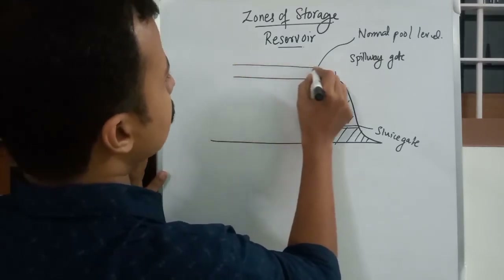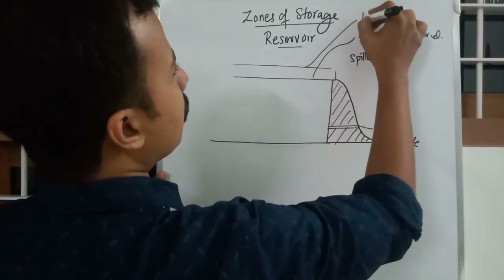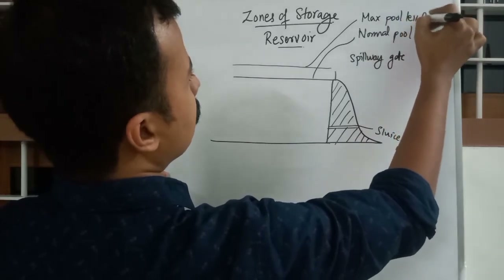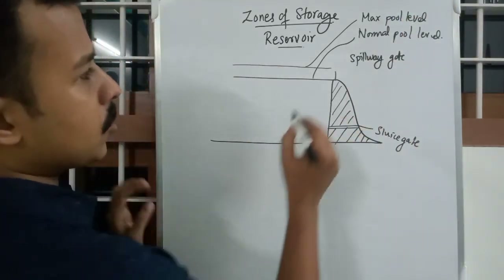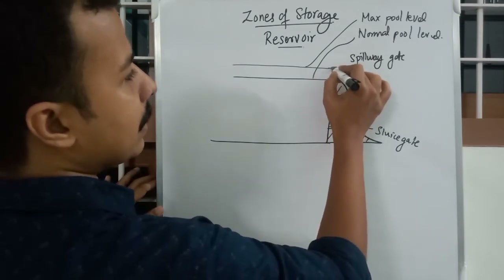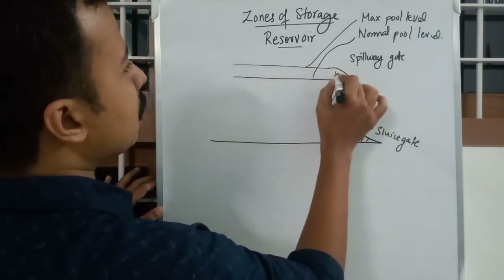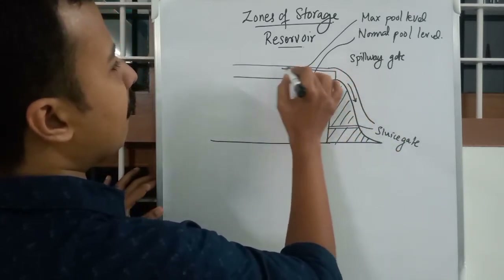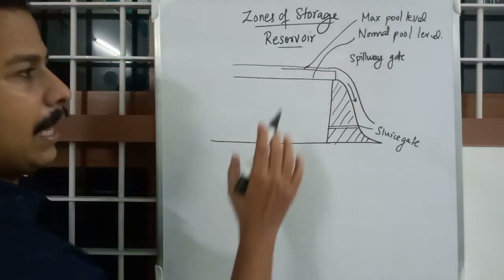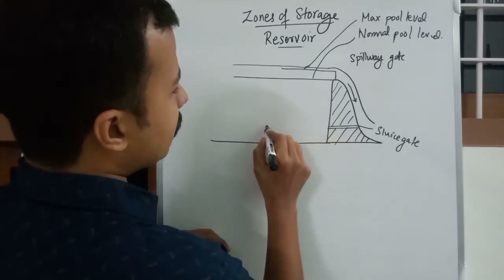In case of design floods, there will be a higher level of water. This is called the Maximum Pool Level. We anticipate this flow of water, so we open the spillway gate and water flows out. There will be a level of water that is the Maximum Pool Level.